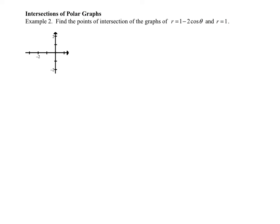We also need to find intersections of different graphs. Notice this value is smaller than this value, so we're going to get a little loop in there. The curve goes out to negative 3, so I know my curve goes out there, and then my inner loop is going to have a value of 1. I have r equals 1 — that's just a circle with radius 1. Looking at the points of intersection, it looks like I have three points I'm going to be dealing with.